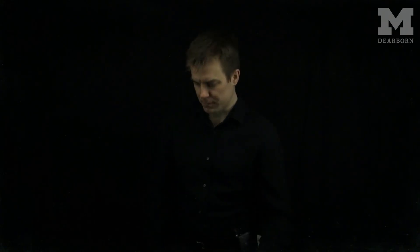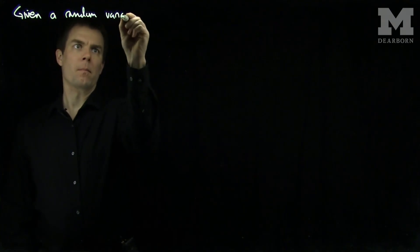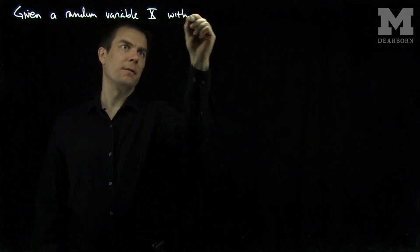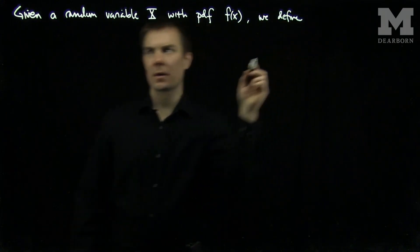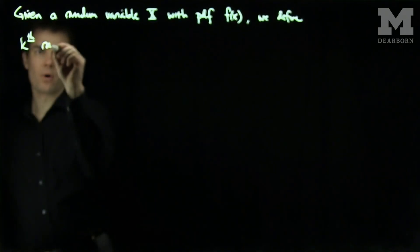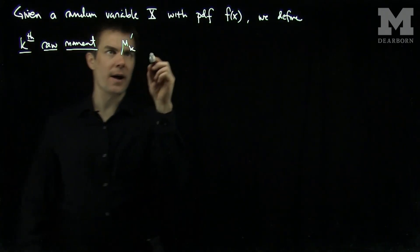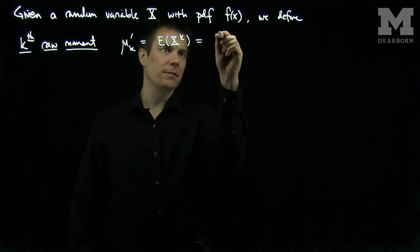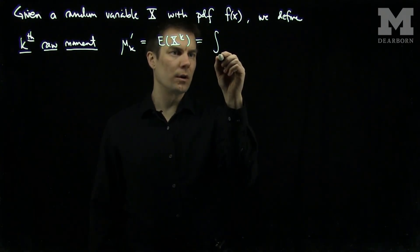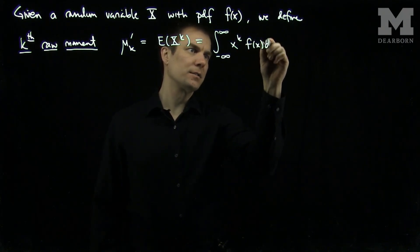Hello students. In this video we'll see the relationship between raw and central moments of random variables. Given a random variable x with pdf f, we define the kth raw moment mu_k prime as the expected value of x to the power k, which we can compute using the pdf as the integral over negative infinity to infinity of x to the k, f dx.